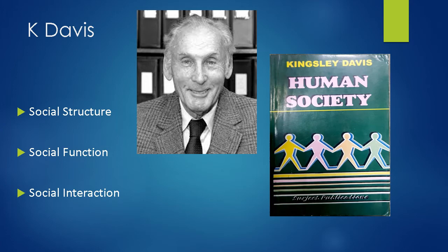What are the main elements of social structure, how they are going to change, and what are the reasons for diversity in social structure? Is there any relationship between social structure and social function? How are social functions helpful in running the social structure? And if there are any changes happening in social function, how they are happening, and what are the major goals of social functions?